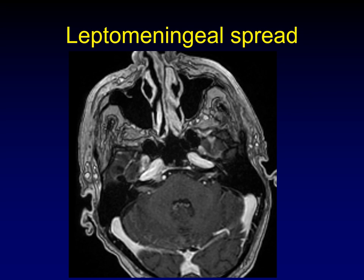Here's another example of leptomeningeal spread, this time along the seventh and eighth cranial nerves. It looks exactly like perineural spread of tumor.